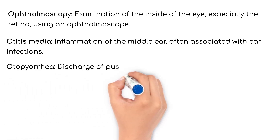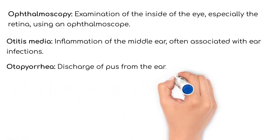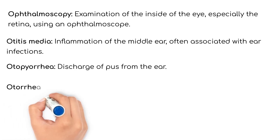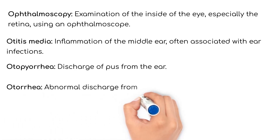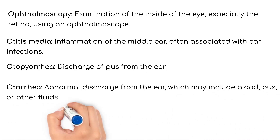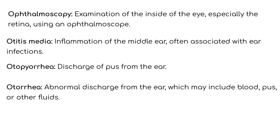Otopyorrhea: discharge of pus from the ear. Otorrhea: abnormal discharge from the ear, which may include blood, pus, or other fluids.